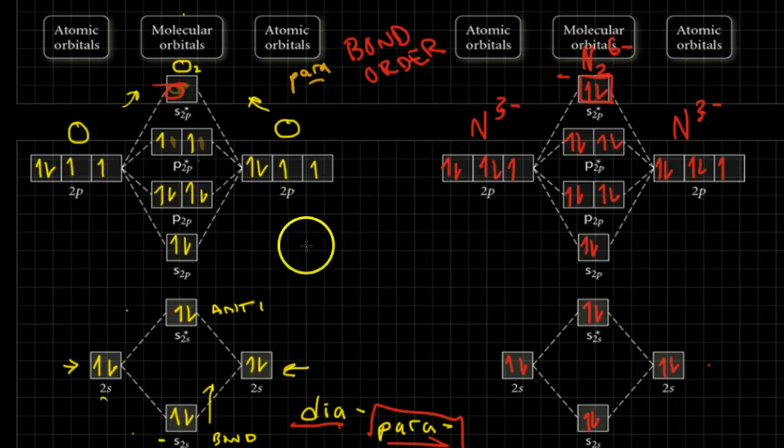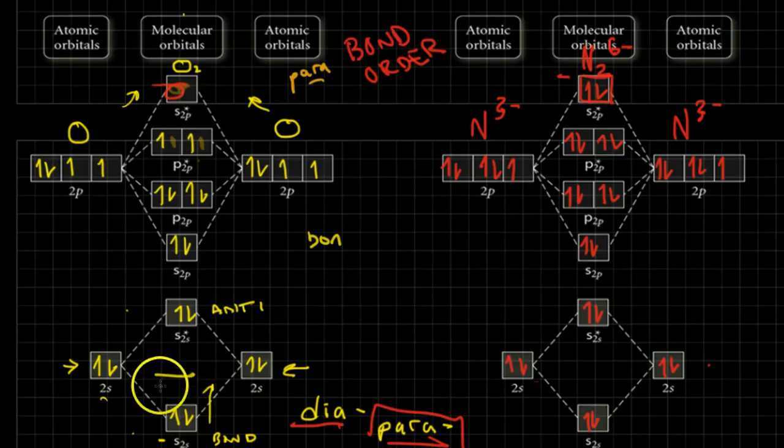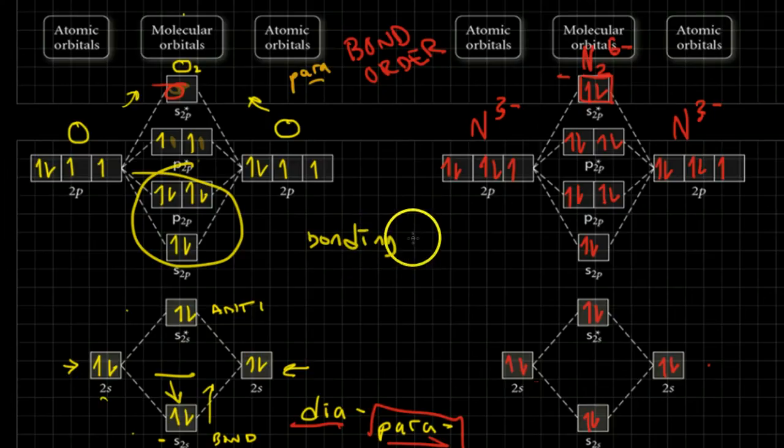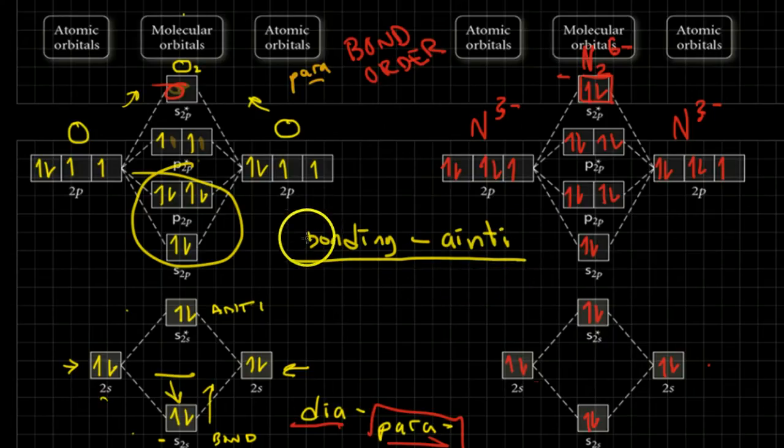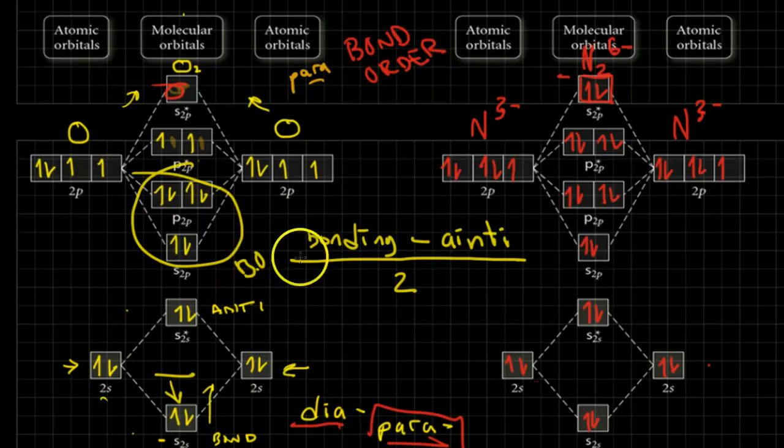What determines the stability of a bond is this number of the bond order, which is if you take the number of bonding electrons, that's these down here, right? Take the bonding electrons minus the antibonding, or the anti. I'm going to divide that by two, and that gives me my bond order.